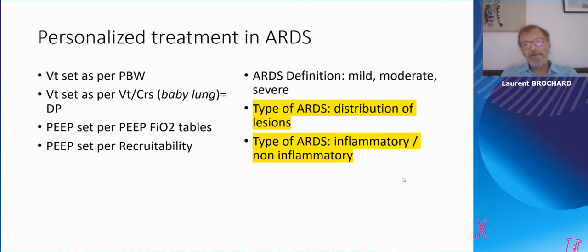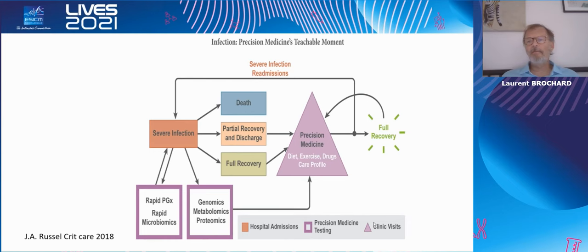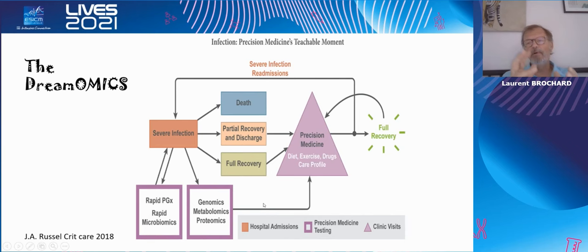Moving from single parameters to full patient characterization, we now have two big possibilities: inflammation and lung morphology. Regarding biological characteristics — what I call the 'dream omics,' not sarcastically, but meaning we're not there yet — the idea is that different assessments like pharmacogenomics, metabolomics, and proteomics could tell you how the patient is responding to infection. This could guide drug choices and post-discharge treatment: the best diet, the best exercise profile for the patient.